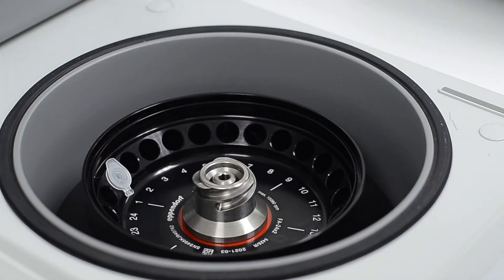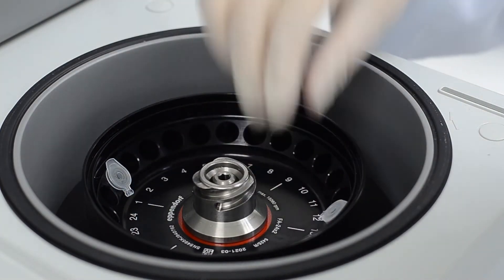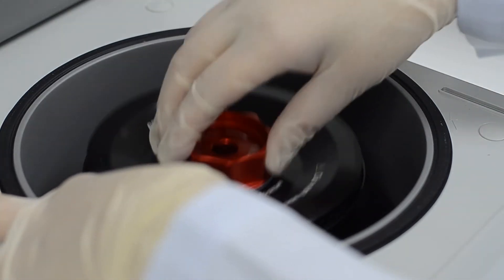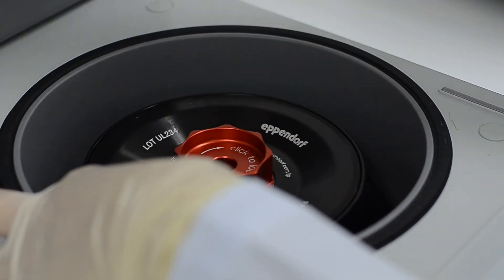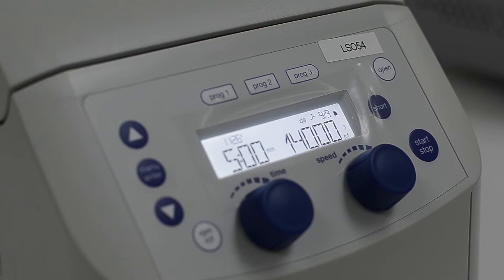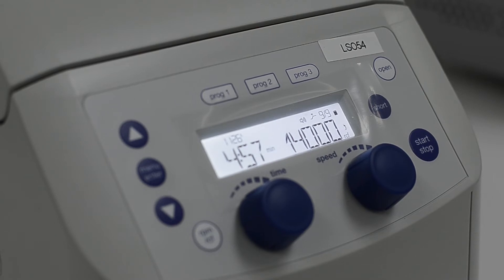Transfer the tube to a centrifuge machine. Centrifuge the mixture at 14,000 G for 5 minutes to spin down the precipitate.